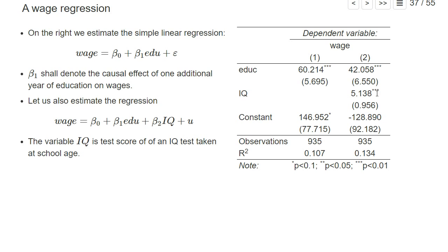But even if there are more confounders and it's not clear that we have any source of exogenous variation in the education variable, the coefficient moves in the same direction. Surprisingly, in my experience this happens very often — even with additional problems, adding a control variable typically moves the coefficient of interest in the direction you would expect from a much simpler model.